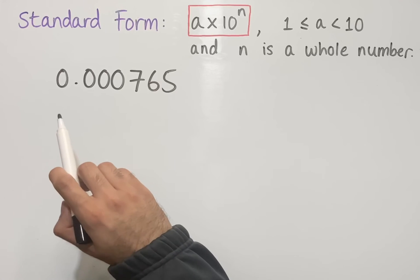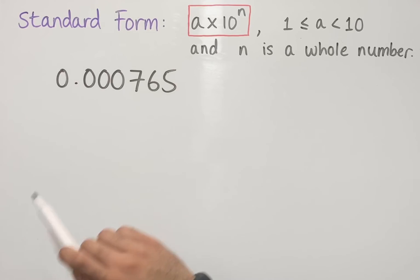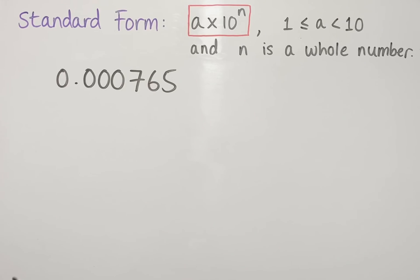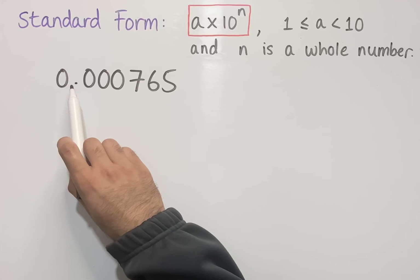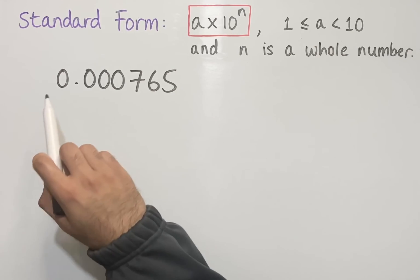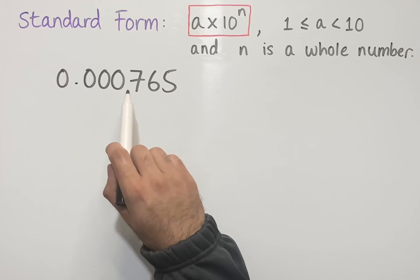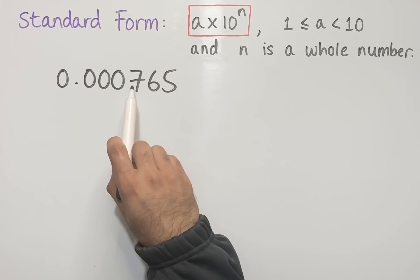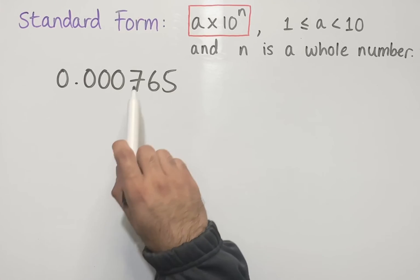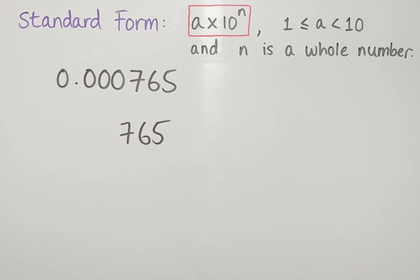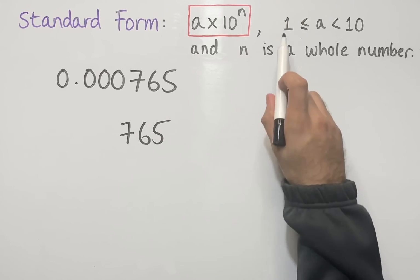Let's look at how to convert a small ordinary number into standard form using the same number from the previous example. We first need to think about where we place the decimal point so that we end up with a number between 1 and 10. A quick way to do this is to ignore the zeros before the first significant figure. The 7 is the first significant figure, so we write all the digits from 7 onward — giving us 765 in this case — and then place the decimal point between two digits to get a number between 1 and 10.